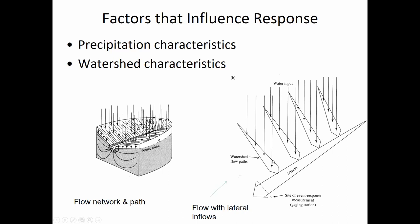Streams get wider as you move in the direction of water movement because at each point the contributing area increases — from overland flow to channelized flow. The channel grows progressively larger as more water is conveyed. Several small streams contribute to a much larger stream, with lateral inflows increasing the volume. At a location of interest — where we're gauging the stream or have a crossing — we determine peak flow rate to size a culvert or bridge.